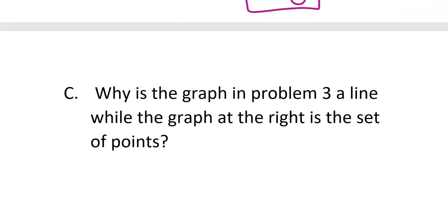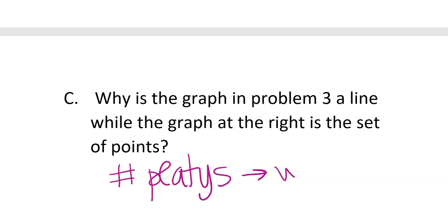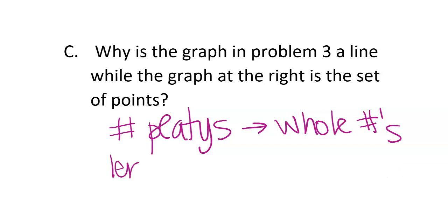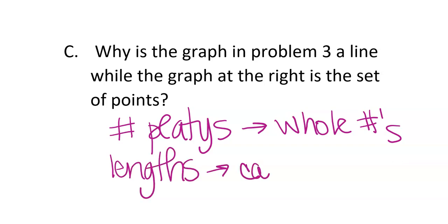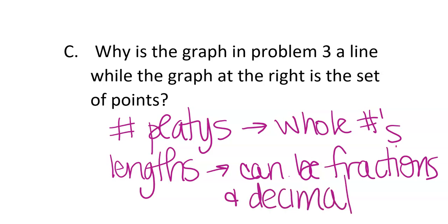The last question asks: why is the graph in problem three a line, while the graph for the platy cost is a set of separate points? It's because the number of platies has to be a whole number — you can't have a partial number of fish. But the lengths of fish can be fractions and decimals. So in problem three, the x-axis is length and can take any value, while the platy count can only be whole numbers, making the graphs look different.